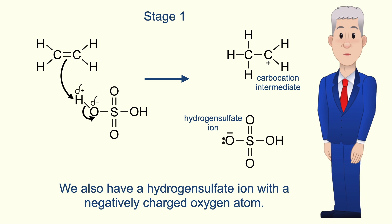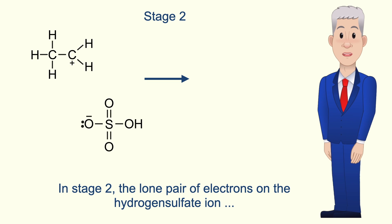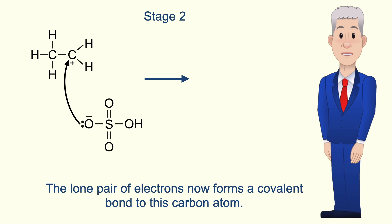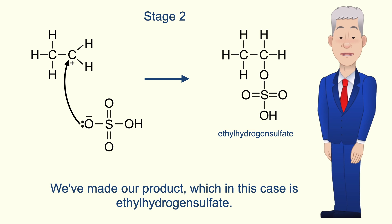We also have a hydrogen sulfate ion with a negatively charged oxygen atom. In stage two, the lone pair of electrons on the hydrogen sulfate ion are attracted to the positive carbon atom on the carbocation intermediate. The lone pair of electrons now forms a covalent bond to this carbon atom, and we've made our product, which in this case is ethyl hydrogen sulfate.